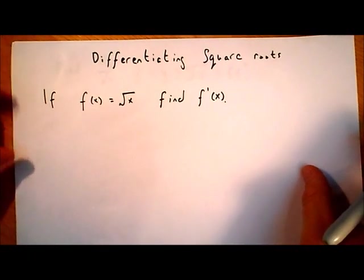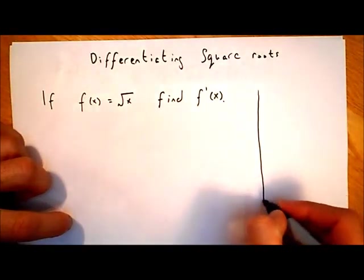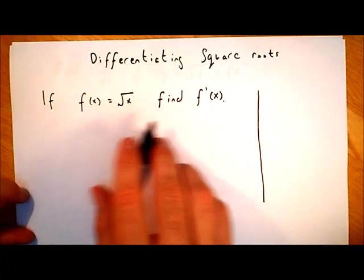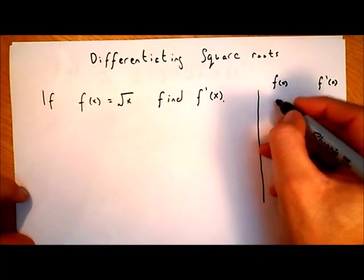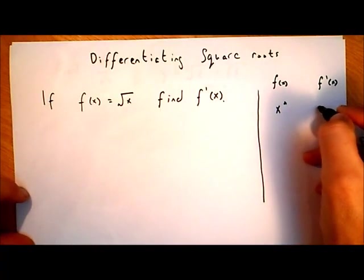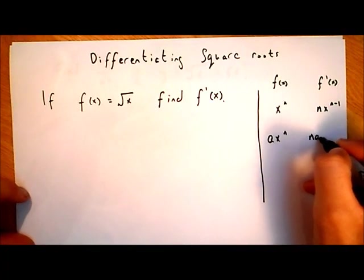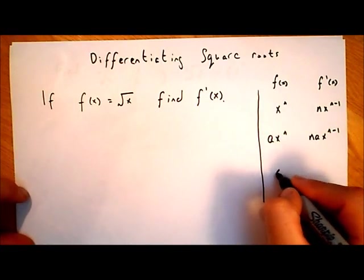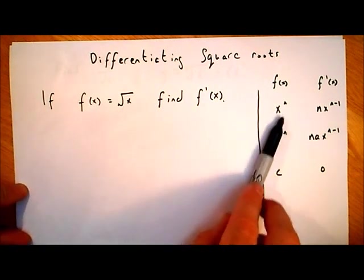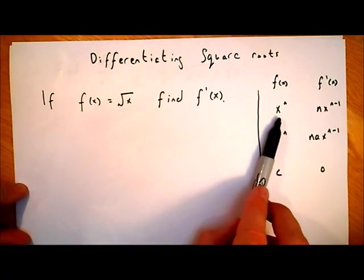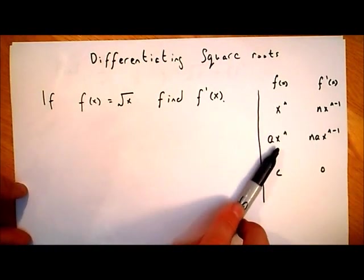Let's go back to the question we had originally. If f of x is equal to the square root of x, find f dash of x. Let's write down the rules for differentiating — we don't have to do this by first principles. When we differentiate x to the power of n, we get n times x to the power of n minus one. When we differentiate ax to the power of n, we get n times ax to the power of n minus one. And if we differentiate a constant c, we get zero. When we go to differentiate the square root of x, we haven't got a rule that directly allows us to do that.